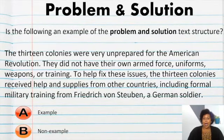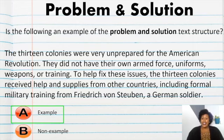Let's try another one to see if we can find the problem and solution text structure. The 13 colonies were very unprepared for the American Revolution. They did not have their own armed forces, uniforms, weapons, or training. To help fix these issues, the 13 colonies received help and supplies from other countries. Including formal military training from Frederick von Steuben, a German soldier. Is that an example or not an example? If you said example, you are right on the money. The phrase that helped me determine that this was an example of problem and solution text structure. It says to help fix these issues. There was a problem of being unprepared. And then they showed how they got better prepared for the American Revolution.